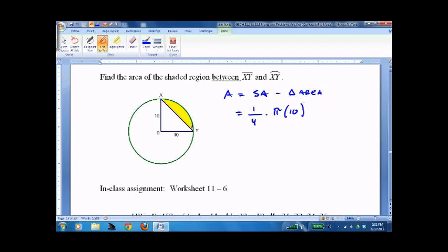And no units. Squared. Minus one half, 10, base times height, 10. Equals 25 pi minus 50.